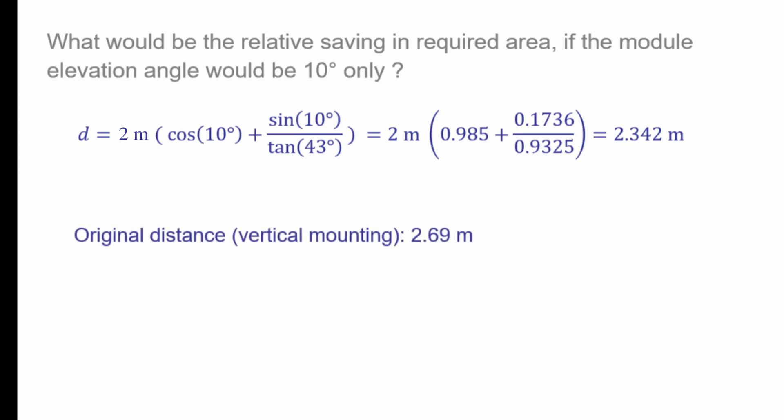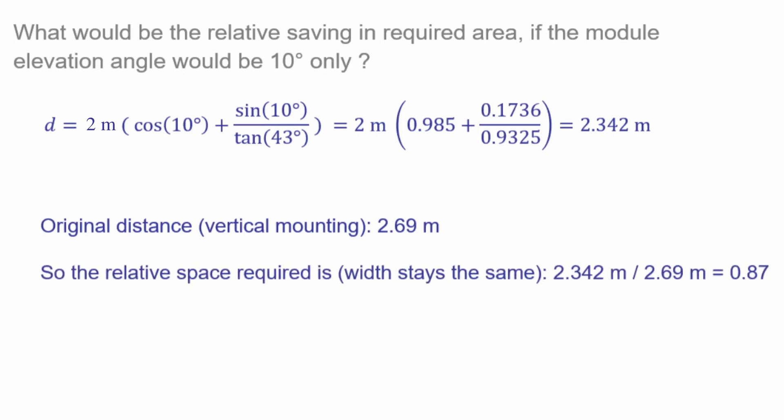So the distance is a bit shorter because it was 2.69 meters. So we have a factor of 0.87. That means, in other words, that we saved about 13% in space to do the flatter installation and the lower shadowing losses.